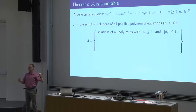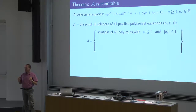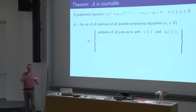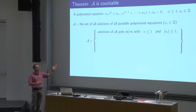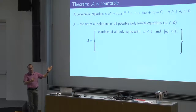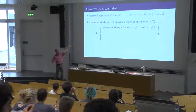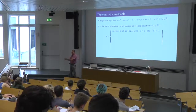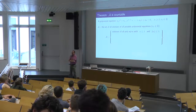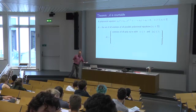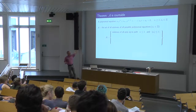How many such polynomial equations are there? Finitely many. The coefficient of x can be 0, 1, or minus 1, and the constant coefficient can also be 0, 1, or minus 1. You have only two coefficients, each with three choices — you can make nine equations. Out of these nine equations you get finitely many solutions. Now look at all polynomial equations of degree at most 2, with all coefficients in absolute value at most 2.